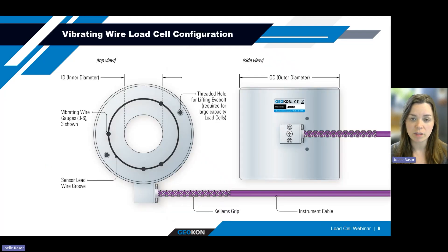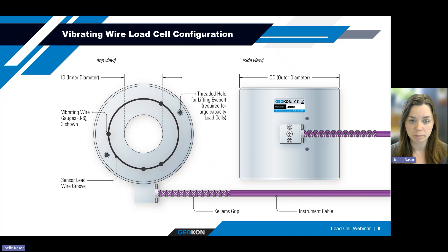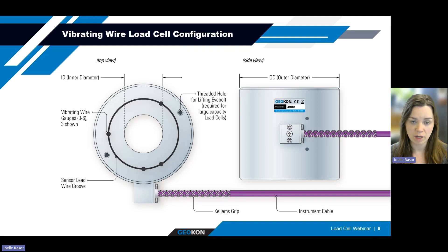This session will focus on the vibrating wire and resistance load cells designed for applications similar to what we just described. There are numerous load cell options available on the market, such as hydraulic or pneumatic type load cells, which may also apply to some of these applications, but we won't be covering them here. The load cells we will be discussing are designed for capacities from 100 to 10,000 kilonewtons — pertinent to Geocon type load cells, but by no means exclusive to all types. There are manufacturers that offer designs for smaller or larger loads depending on your application.